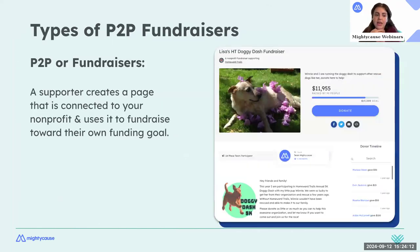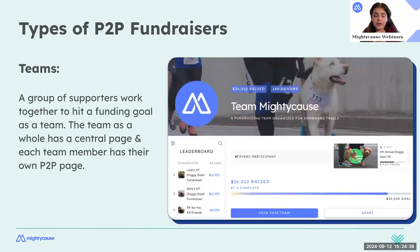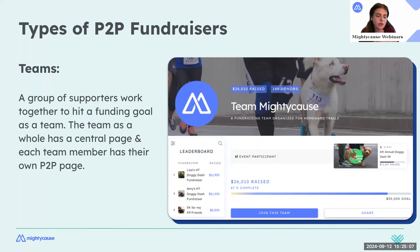There are different types of pages you can create. A fundraiser is a standalone page with a donate button and thermometer that a supporter creates connected to your nonprofit, used to fundraise toward their own goal. A team page is a group of supporters who work together to hit a funding goal — the team has a central page and each team member has their own page. It's ideal for smaller groups who want to fundraise together. The team page also features a leaderboard that can be ranked by dollars raised or alphabetical order.